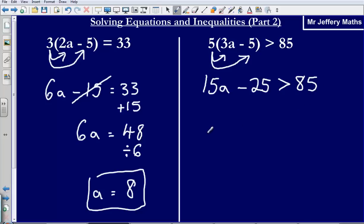So at this point, what I now need to do is I need to get rid of the negative 25. And I'm going to do that by adding 25. So by adding 25 to both sides, I can get rid of the negative 25.